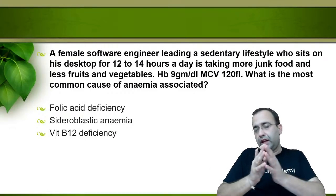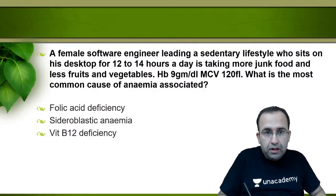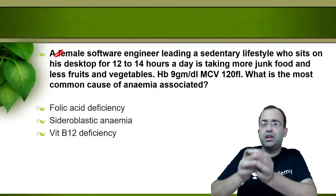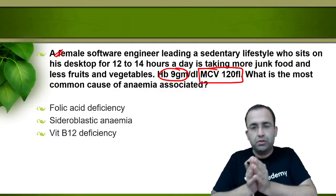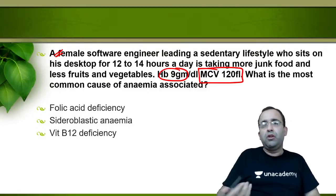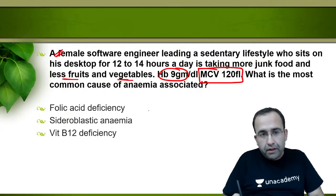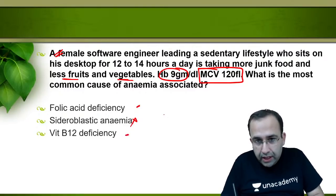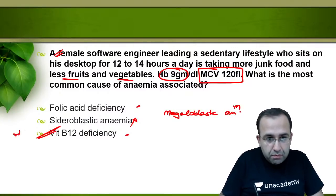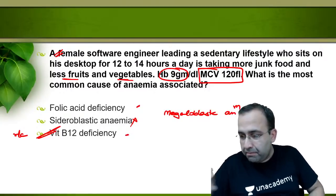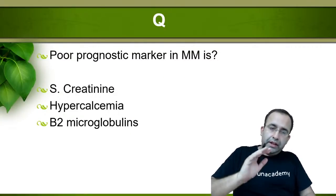Next question: a female engineer on junk food with less fruits and vegetables. Hemoglobin is low and MCV is high — this is megaloblastic anemia. Both folic acid and vitamin B12 deficiency cause megaloblastic anemia, but vitamin B12 deficiency is more common. Vitamin B12 stores are lesser in the body. The most common anemia here is vitamin B12 deficiency — answer is option 3.